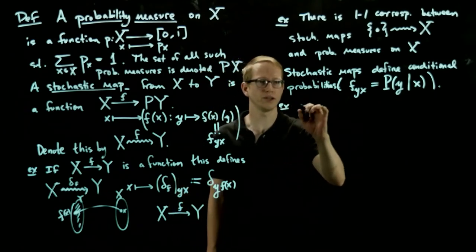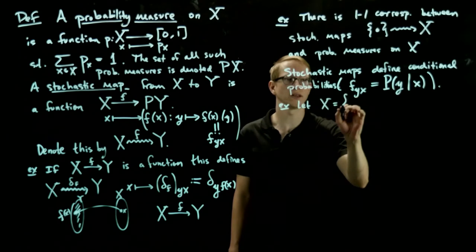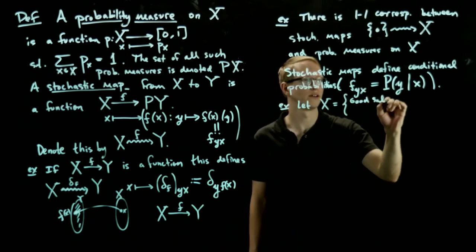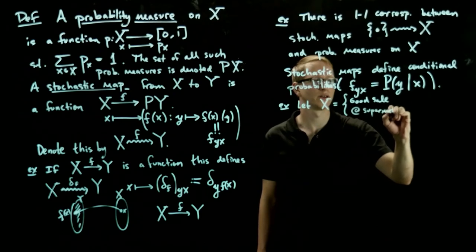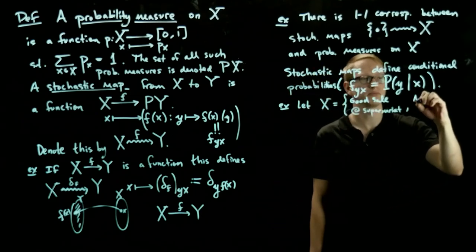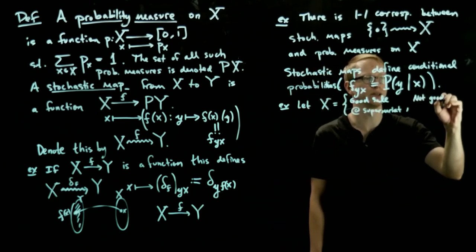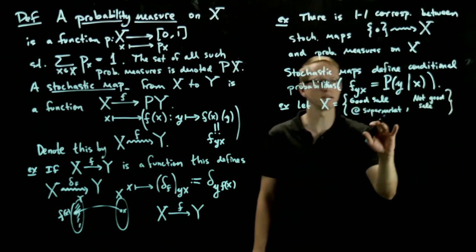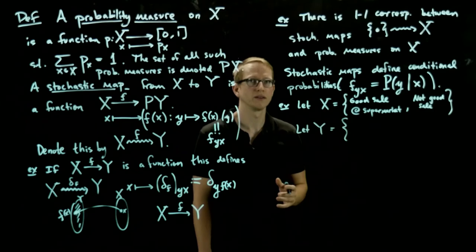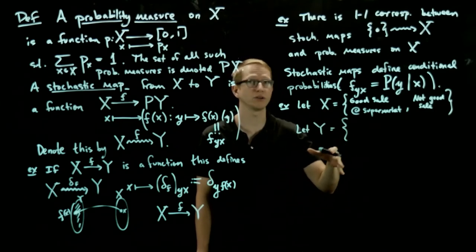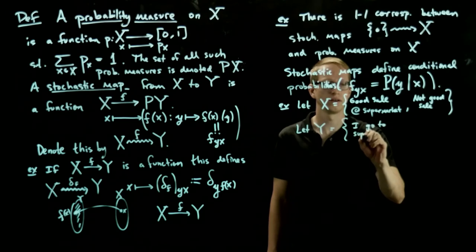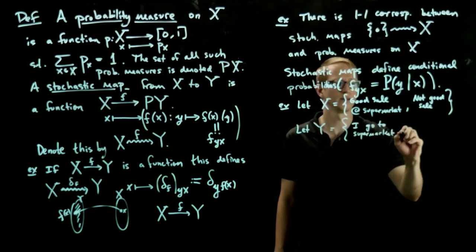So, for being very concrete, let's take X to be the set whose elements are, pick your favorite supermarket, and let's say there's a good sale at that supermarket. Let me think of that as one element of this set X. And the other element is going to be a not great sale, or a not good sale at that same supermarket. So two elements. And let Y be the elements that state whether I go to the supermarket this week, or you go, or whatever, or I don't go. So I go to the supermarket, let's say this week, or something like that, or I don't go.